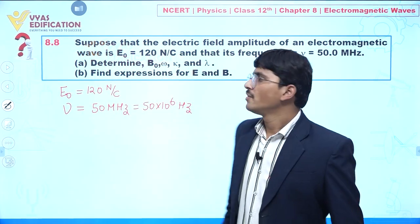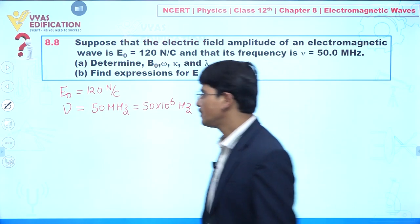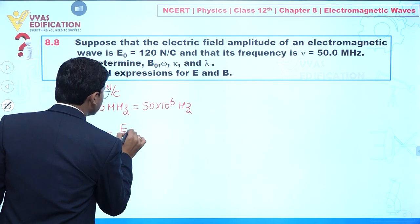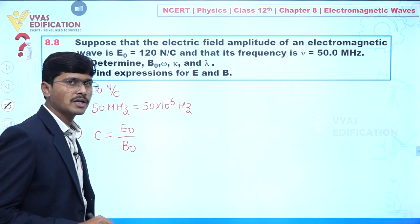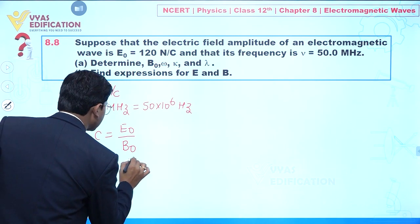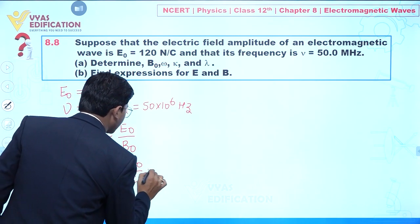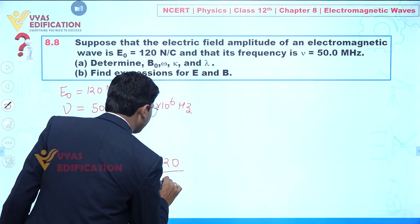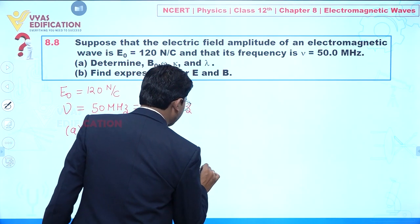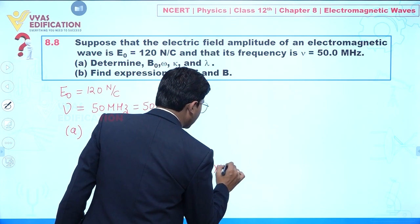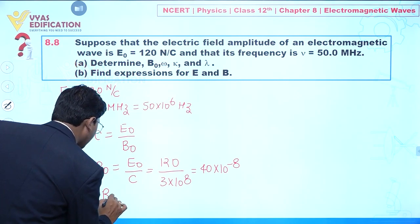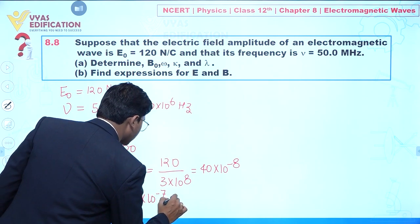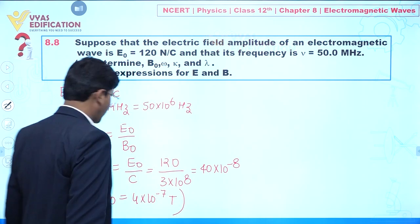We have to determine the maximum value of the magnetic field, B₀. We know the relation c = E₀ / B₀, so B₀ = E₀ / c. The value of E₀ is 120 Newton per coulomb, and c is 3 × 10⁸, giving B₀ = 40 × 10⁻⁸, which equals 4 × 10⁻⁷ Tesla.